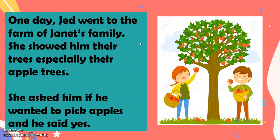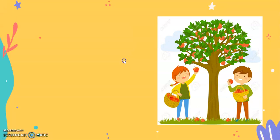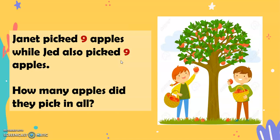Now, one day, Jed went to the farm of Janet's family. She showed him their trees, especially their apple trees. She asked him if he wanted to pick apples and he said yes. Janet picked 9 apples while Jed also picked 9 apples. How many apples did they pick in all?